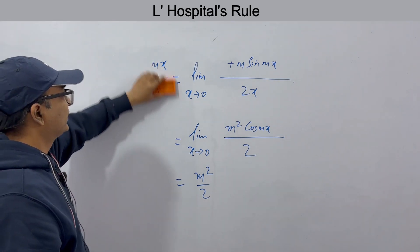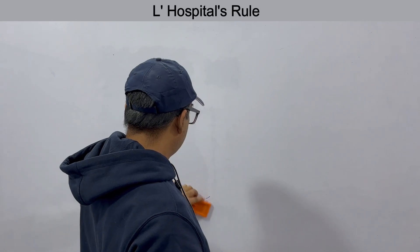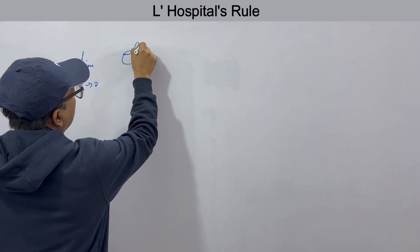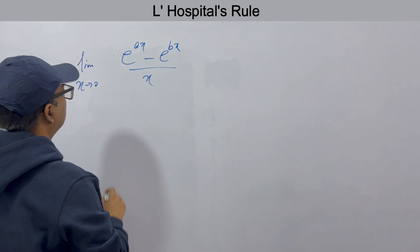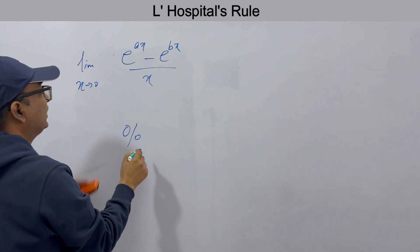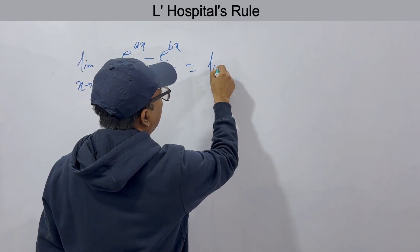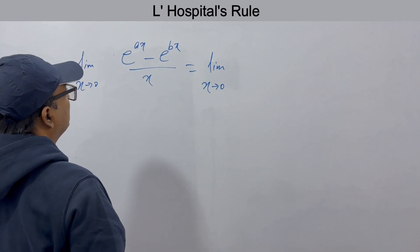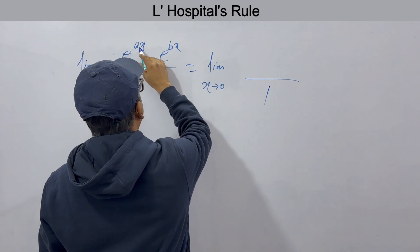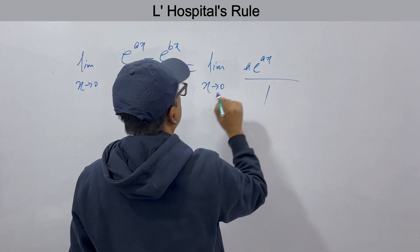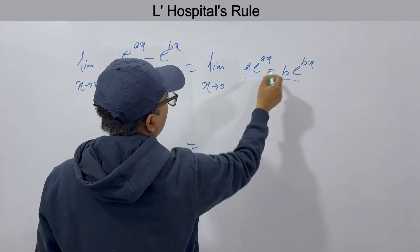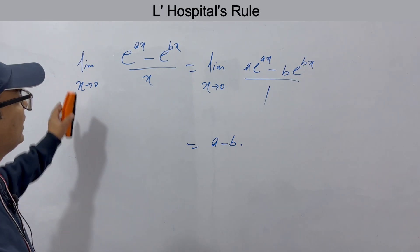Let us see one more easy example: limit x→0 of (e^(ax) − e^(bx)) / x. When you put 0, e⁰ = 1 for both terms, so 1 − 1 = 0 and denominator is 0 — this is 0 by 0 form. Taking the first derivative: derivative of the numerator is a·e^(ax) − b·e^(bx), and derivative of the denominator x is 1. Now put x = 0: a·1 − b·1 = a − b. So the answer is a − b.